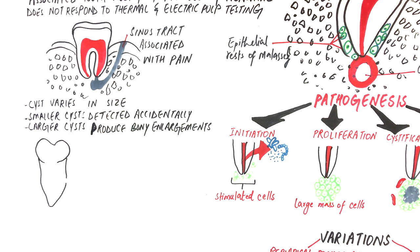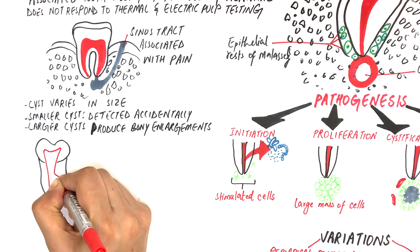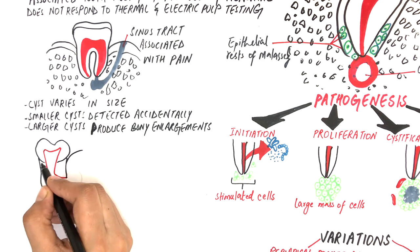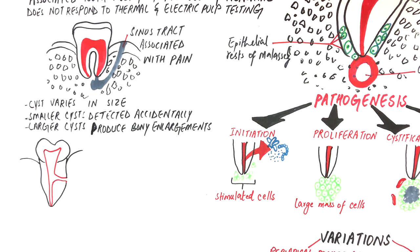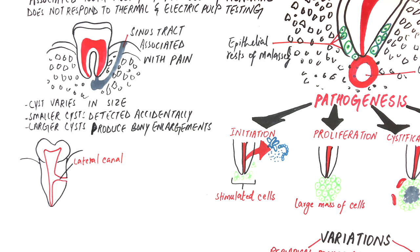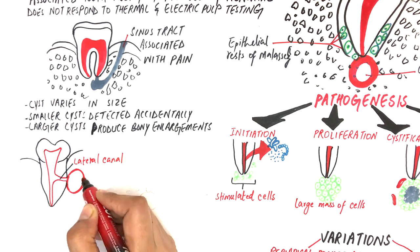Sometimes the inflammation can stimulate the rests of Malassez located adjacent to a lateral canal of the tooth, resulting in a lateral periodontal cyst, and it's just like a periapical or radicular cyst.